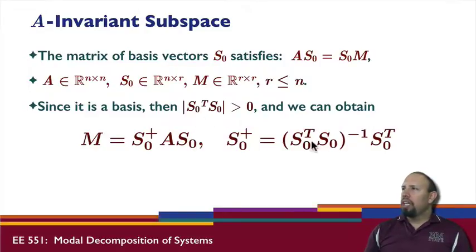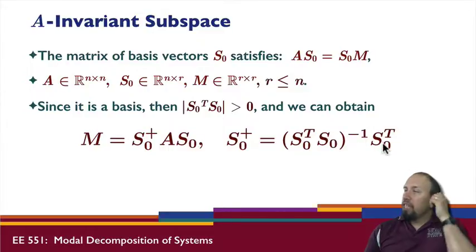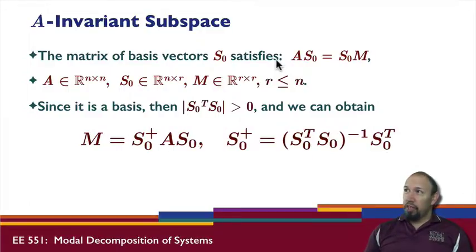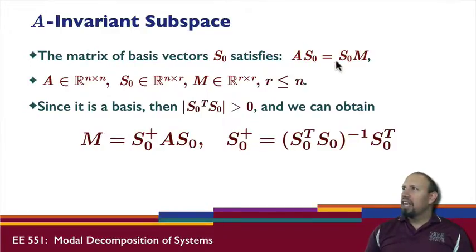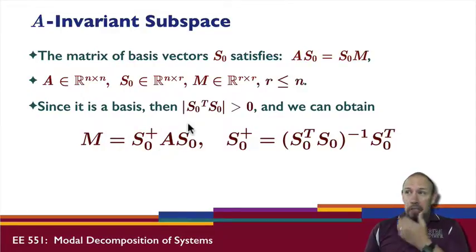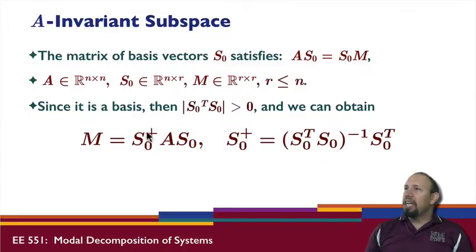Because of that, we can define the pseudo-inverse of S₀: S₀ pseudo-inverse equals (S₀ᵀS₀)⁻¹ S₀ᵀ. Multiplying the relationship A S₀ = S₀ M on the left by S₀ pseudo-inverse, and since S₀ pseudo-inverse times S₀ is the identity, we get M equals S₀ pseudo-inverse times A times S₀. So if we know S₀ and A, we can find M.